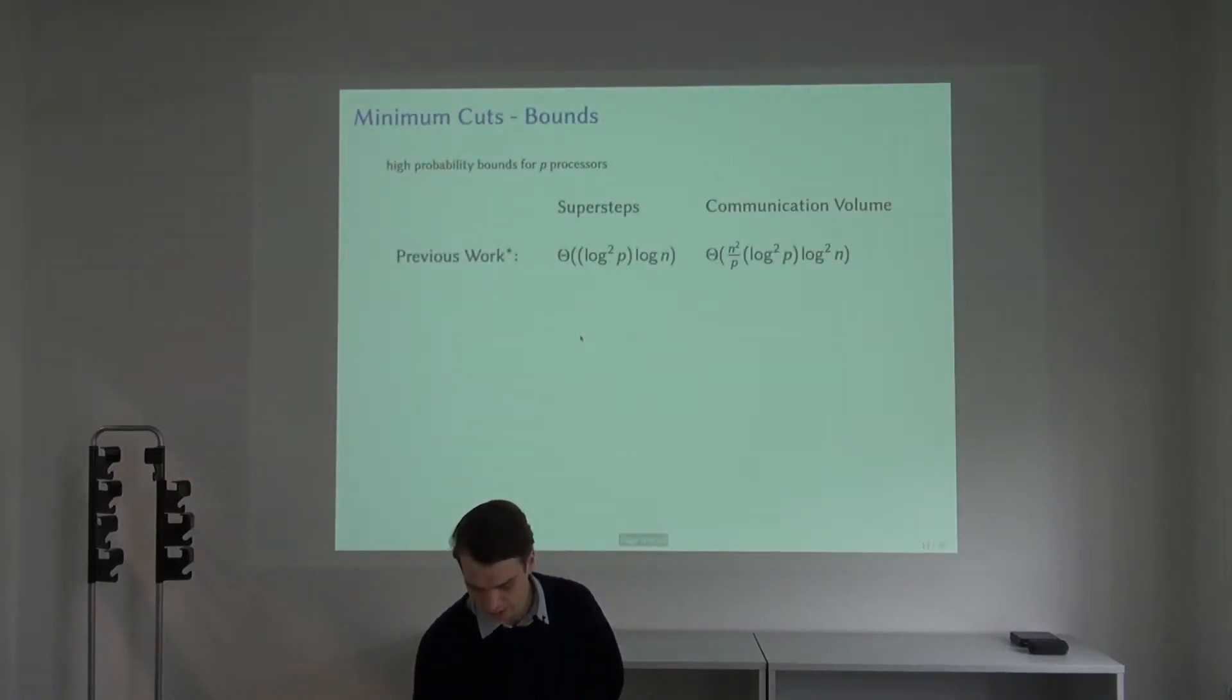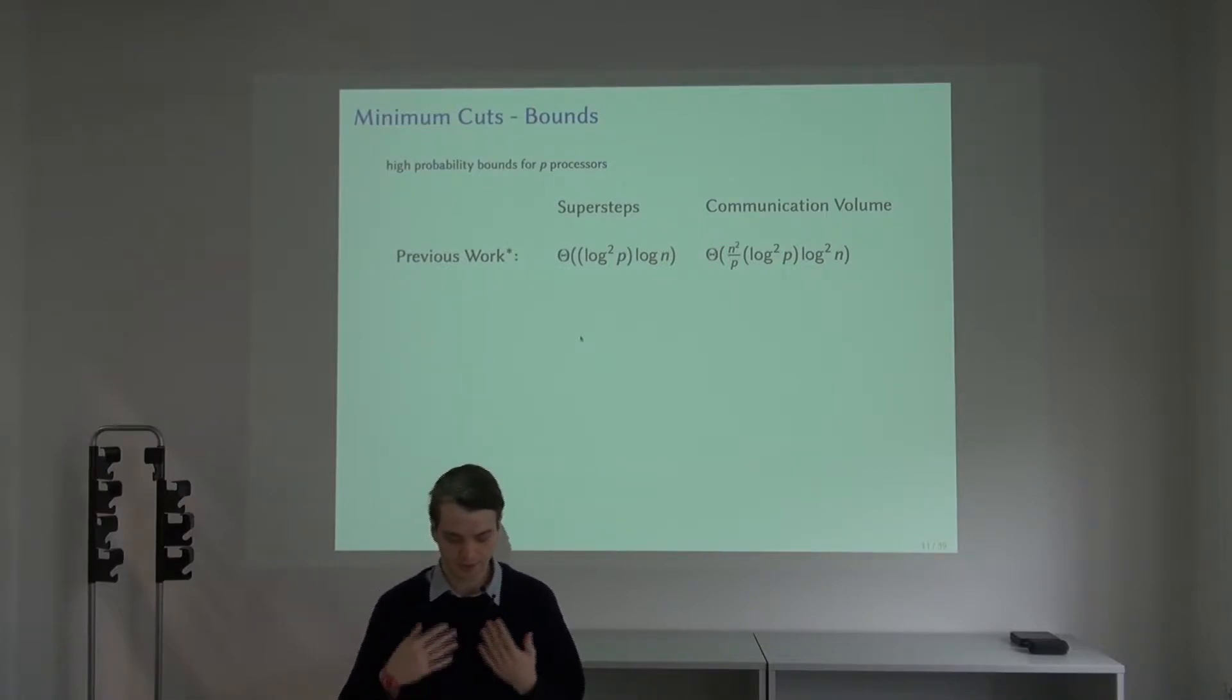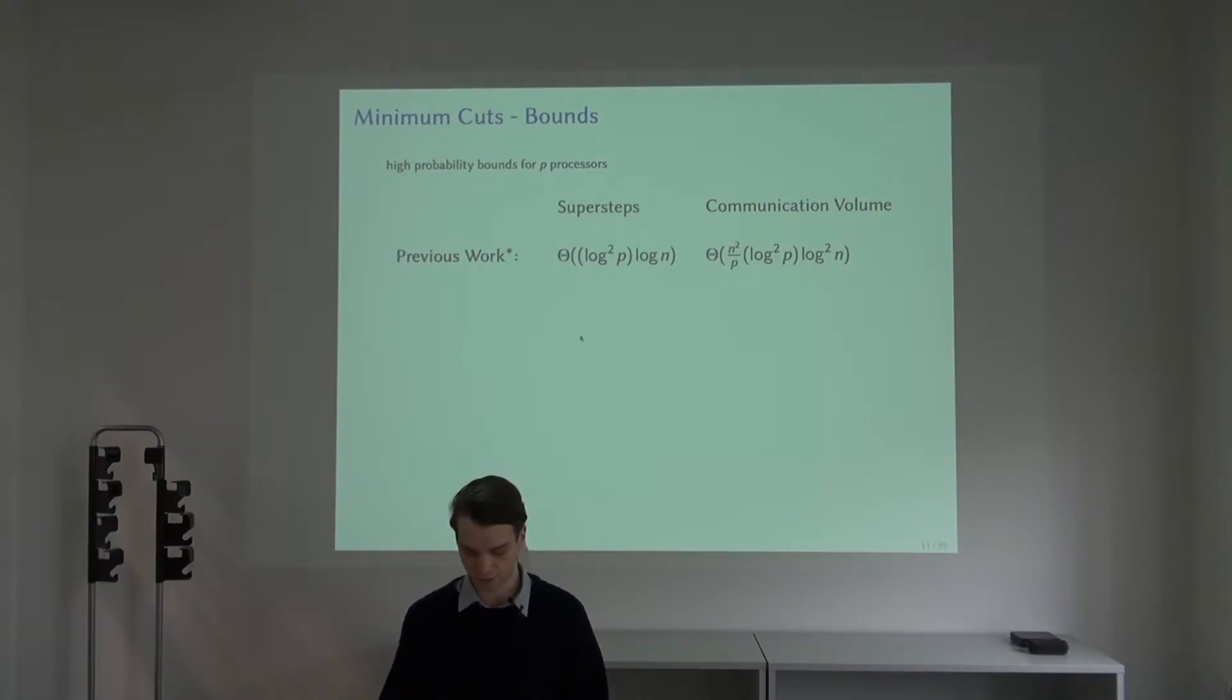There has been previous work on the problem in our model. Notice here that the number of super steps is three logarithmic factors, and for the communication volume the biggest term is n squared over p with four logarithmic factors. We reduce the number of super steps and the communication volume.